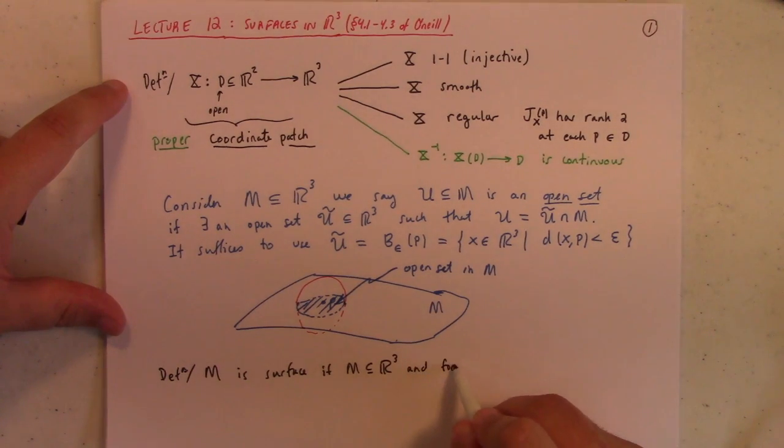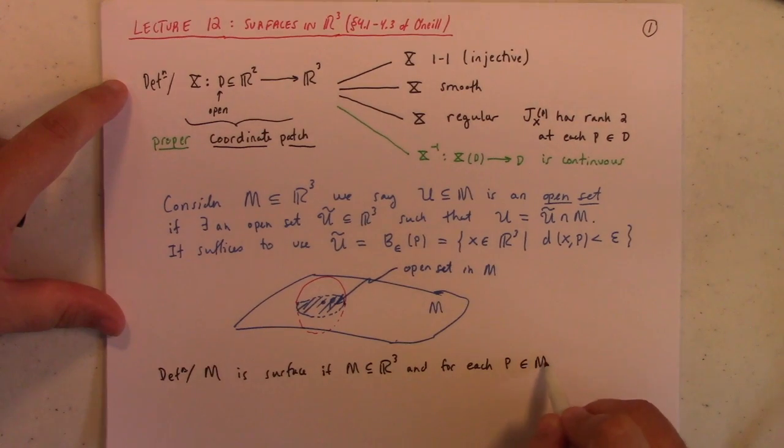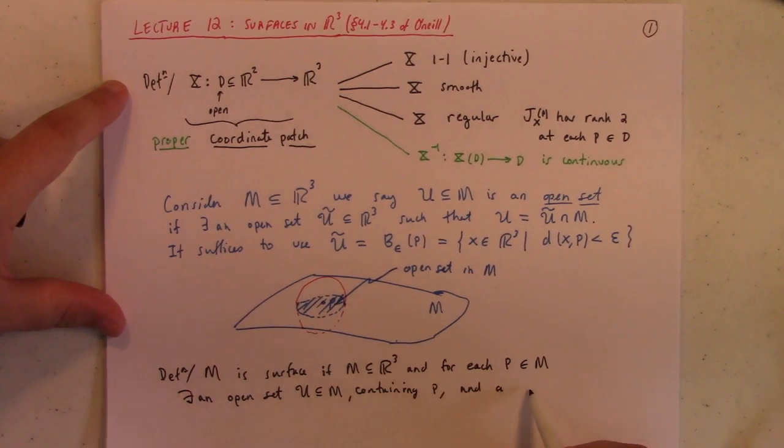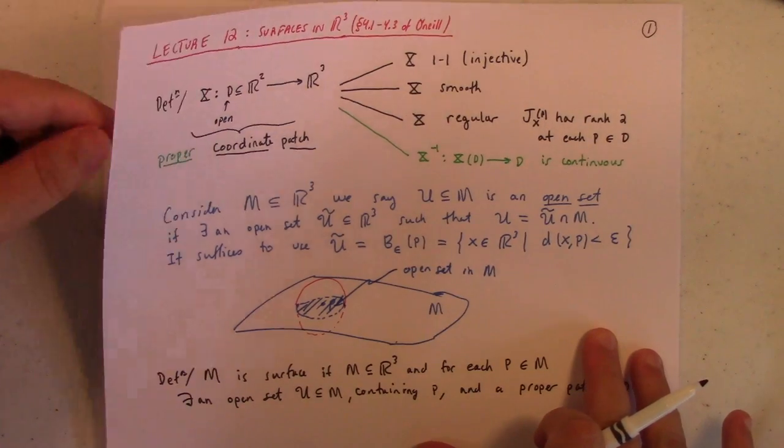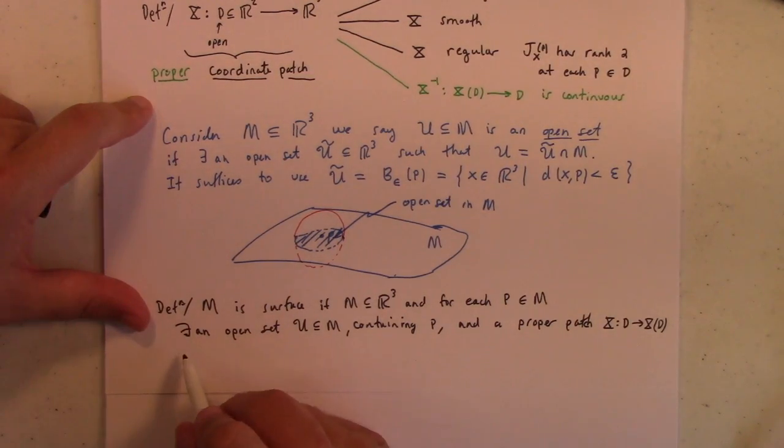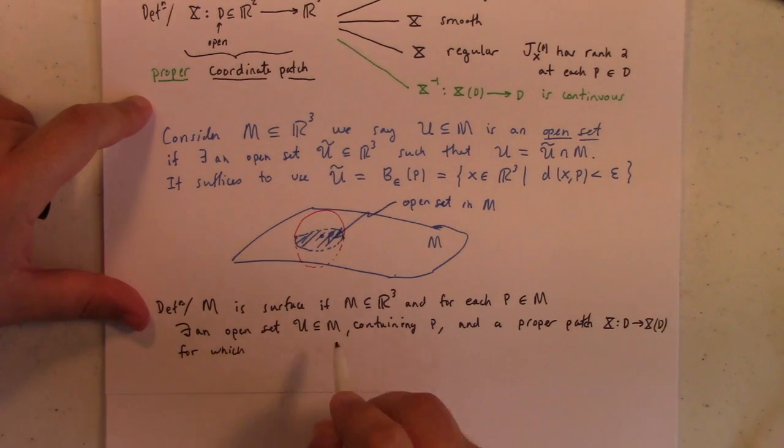If M is a subset of R3, and for each point P in M, there exists an open set U in M containing P, and a proper patch X from D to X of D, for which U is a subset of X of D. And you can do that at each point P.